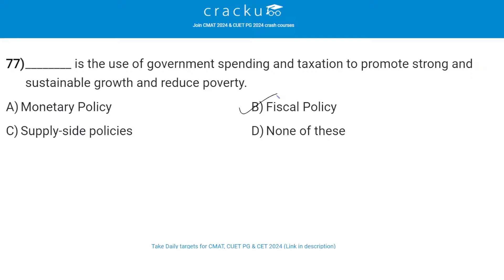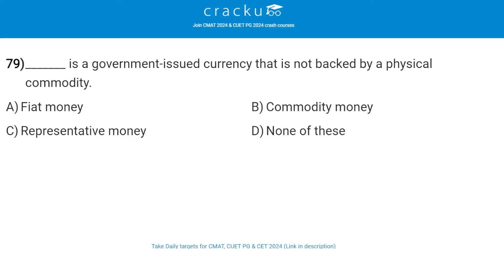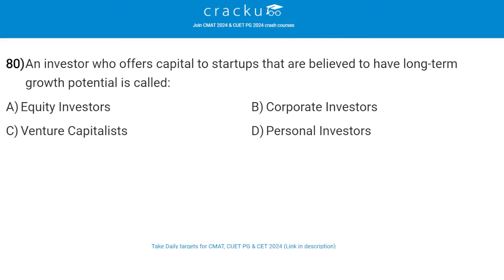Fiscal Policy is the use of government spending and taxation to promote strong and sustainable growth and reduce poverty. Which of the following is a type of bond not backed by collateral? The answer is Debenture Bonds. What is a government-issued currency that is not backed by a physical commodity? The answer is Fiat Money. An investor who offers capital to startups that are believed to have long-term growth potential is called a Venture Capitalist.